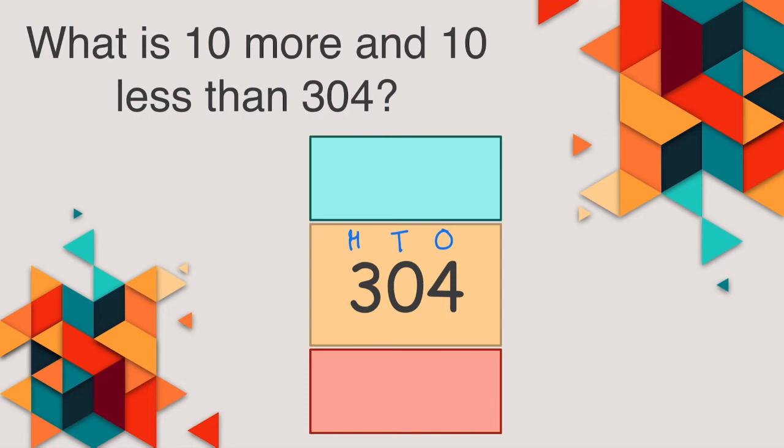Next one. What is 10 more and 10 less than 304? 314 is 10 more than 304. And what is 10 less than 304? Look at both these digits together. 30 minus 1 is 29. So 10 less than 304 would be 294.